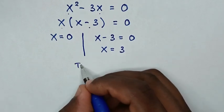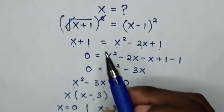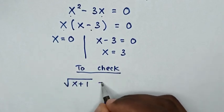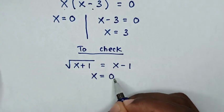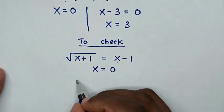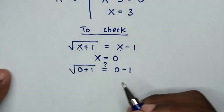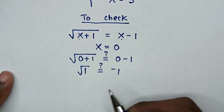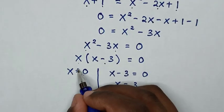Now we check if these values of x are correct using the original problem: square root of x plus 1 equals x minus 1. To check x equals 0, we substitute into both sides. We get square root of 0 plus 1 equals 0 minus 1, so square root of 1 equals negative 1, which means 1 equals negative 1. But 1 cannot equal negative 1, therefore x cannot be equal to 0.